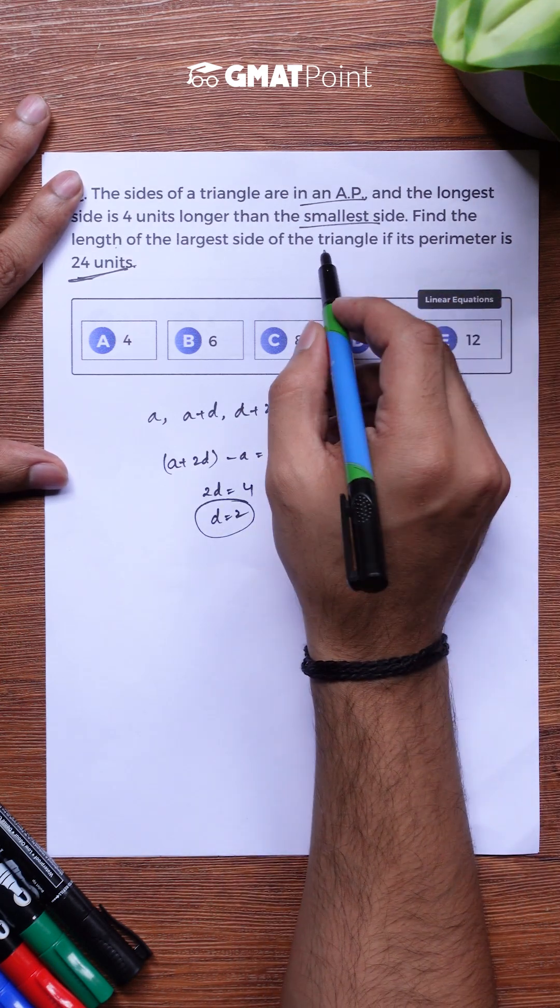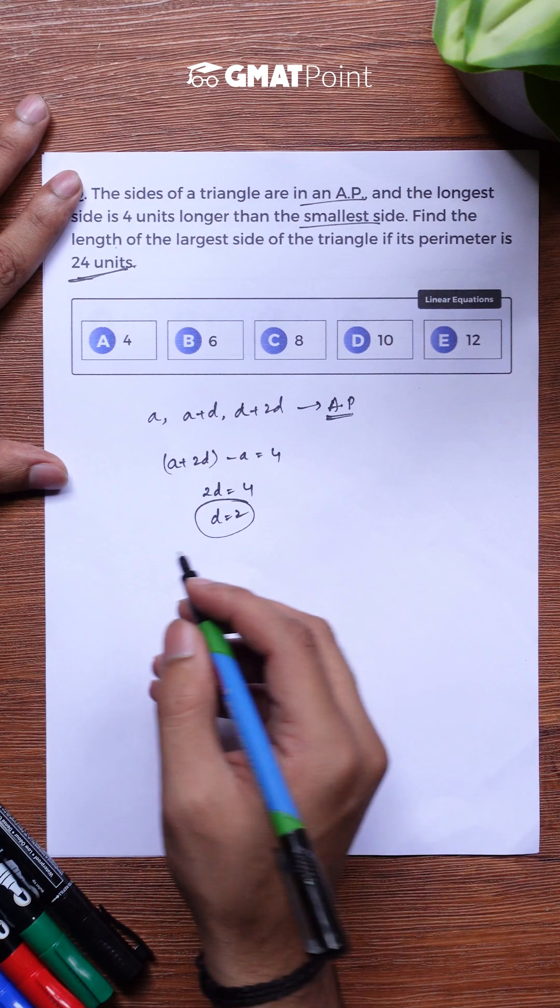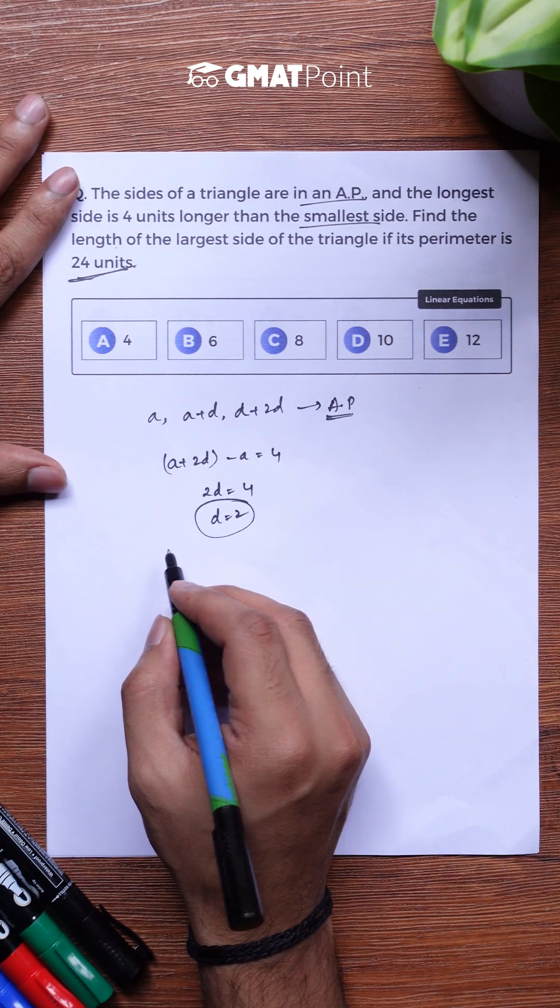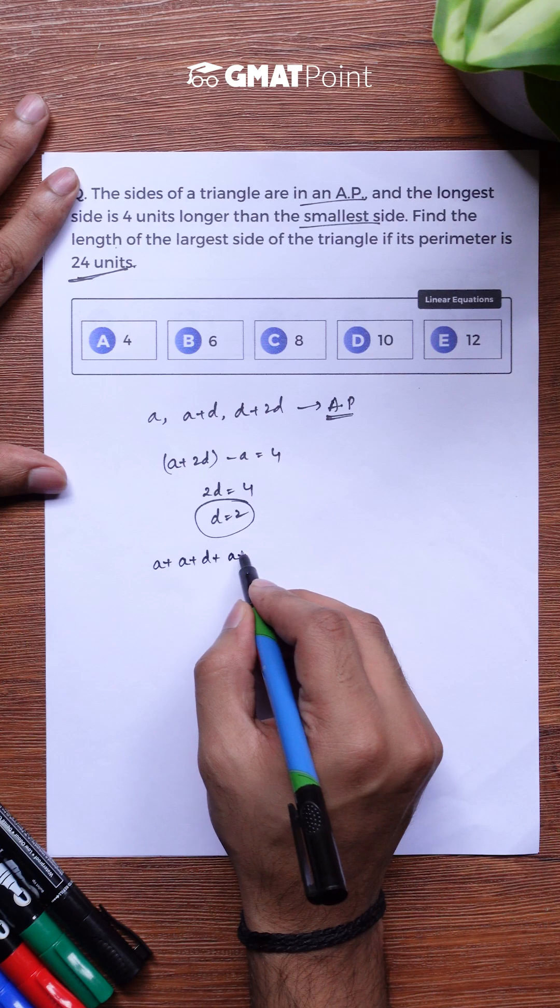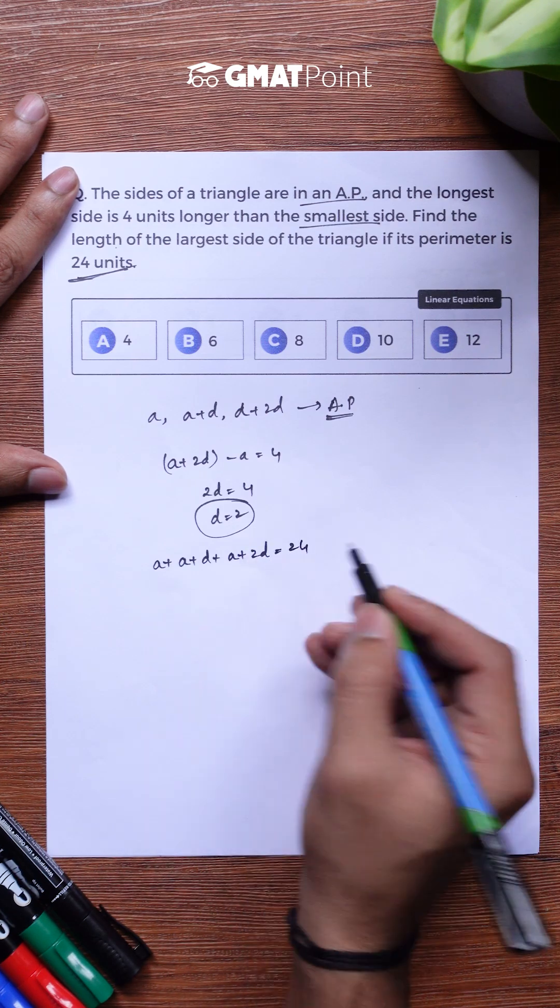The other information given in the question is that the triangle has its perimeter as 24 units. So sum of A, A plus D and A plus 2D should be equal to 24.